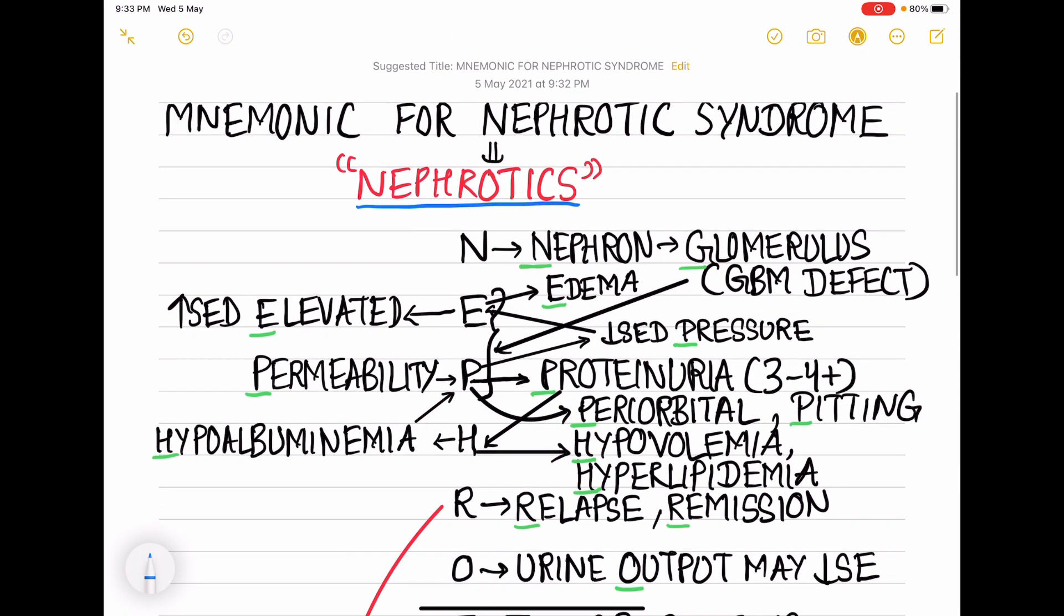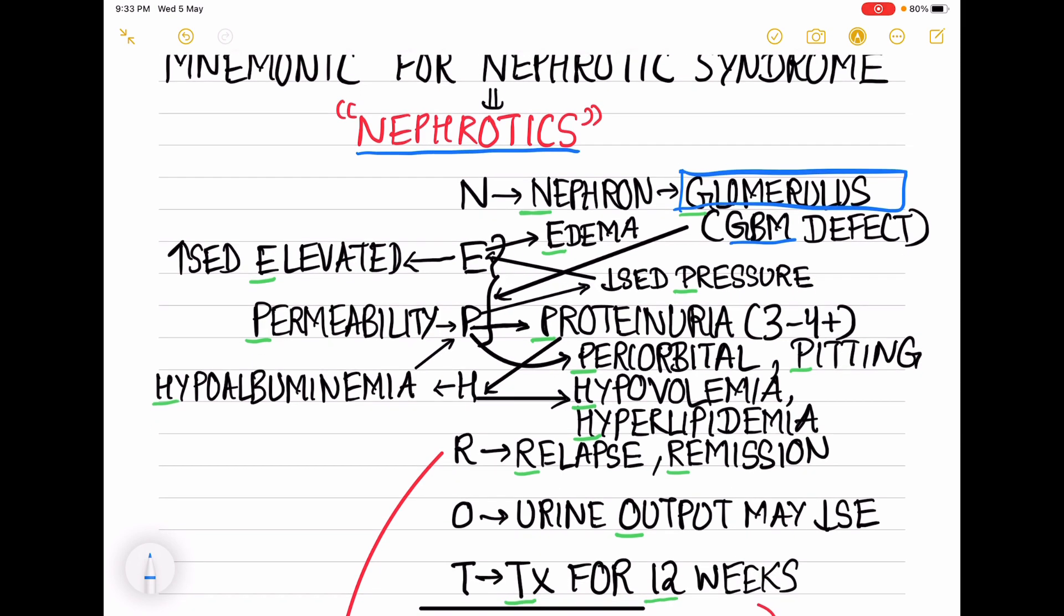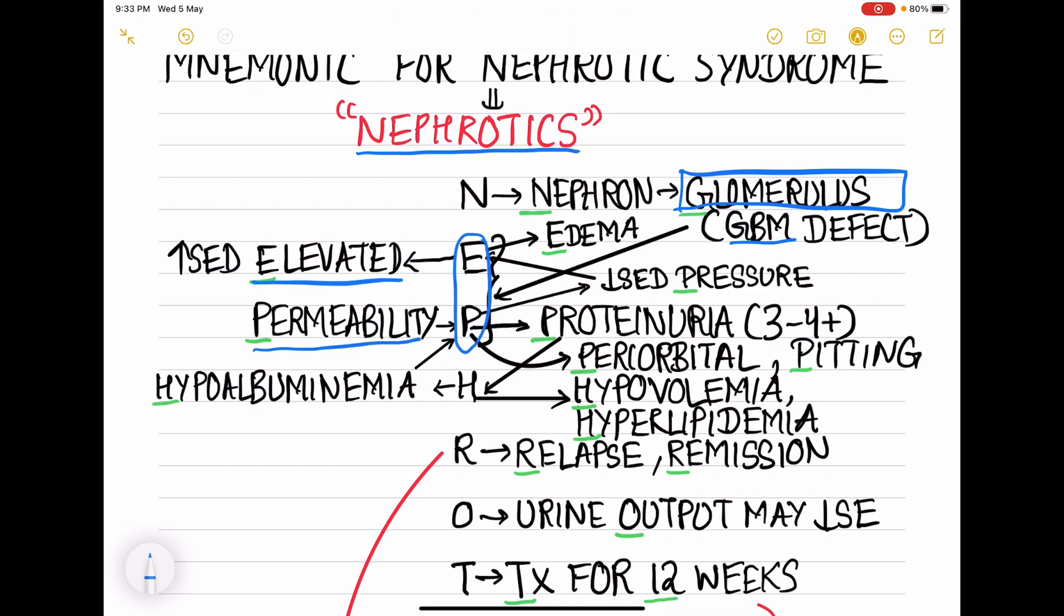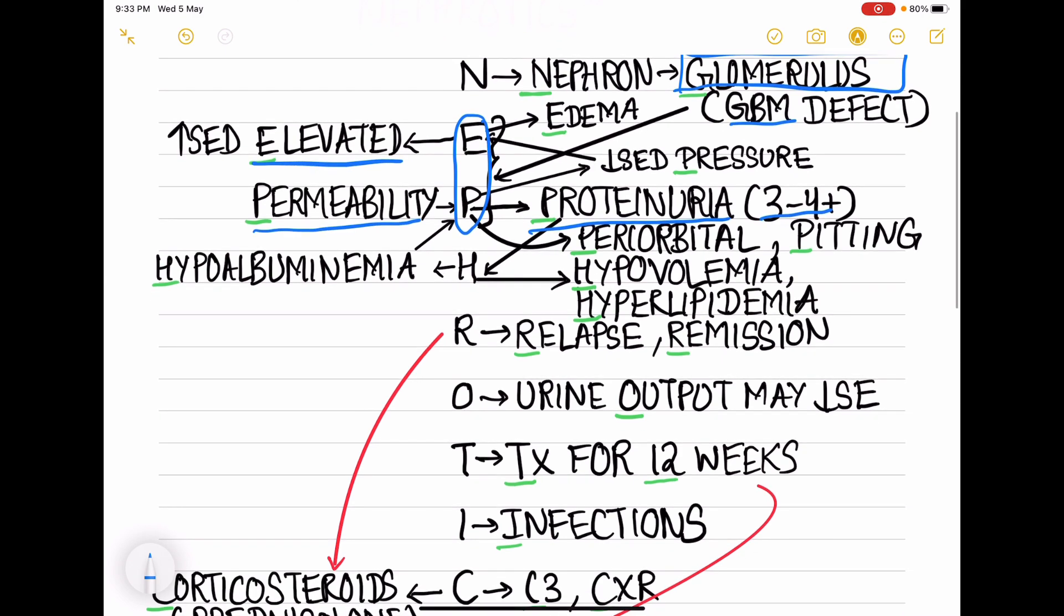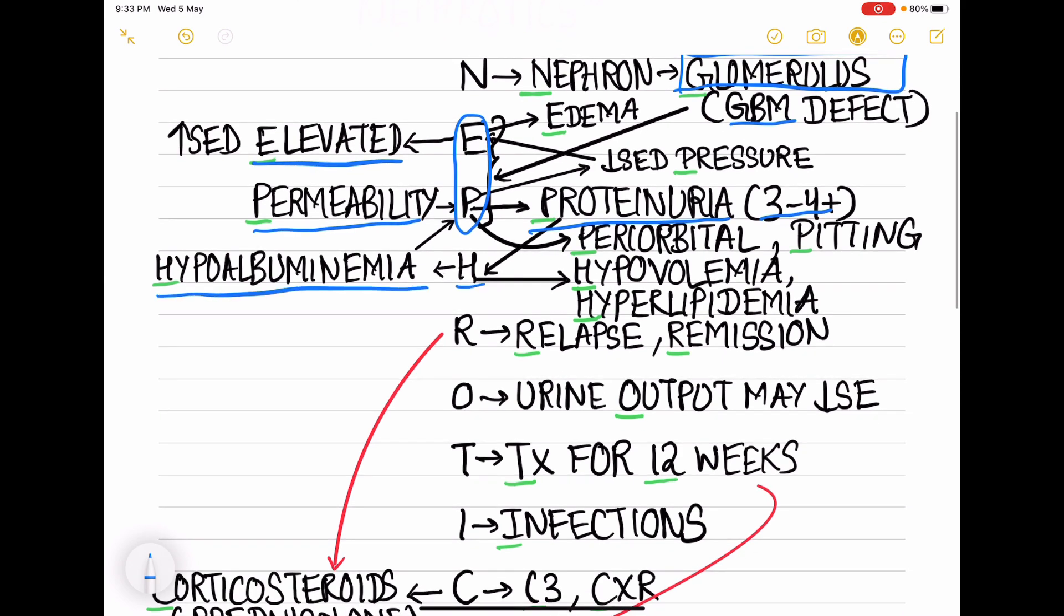First, from the letter N we know that N is nephron. Nephron contains glomerulus. So nephrotic syndrome is basically a problem in the glomerular basement membrane which leads to increased permeability of the glomerular basement membrane. We can remember that by EP - that is elevated permeability. Because of this increased permeability, it leads to proteinuria which is 3 to 4 plus.